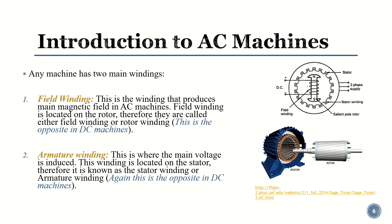Inside the machine we have the stator, which is the stationary part, and the rotor. On the rotor we have windings, and those windings are supplied with DC — these are called rotor windings. We also have stator windings. The rotor winding is also called the field winding. When we supply DC here, current flows through the coil, which produces a magnetic field and a force.